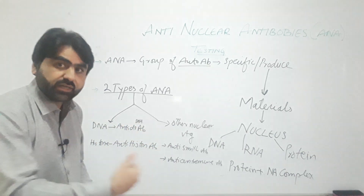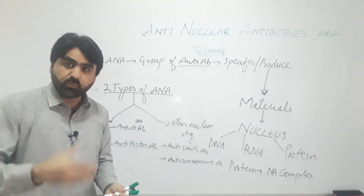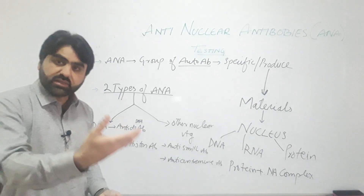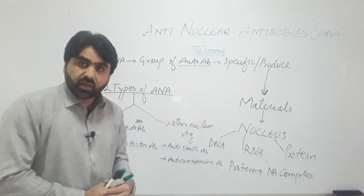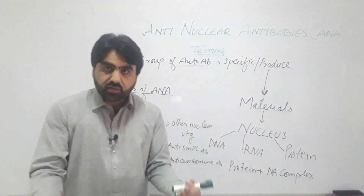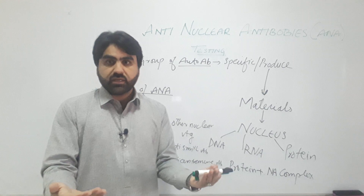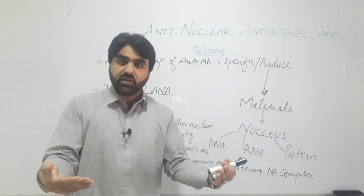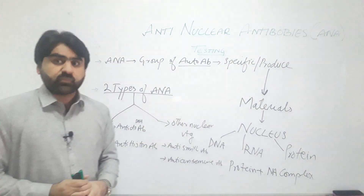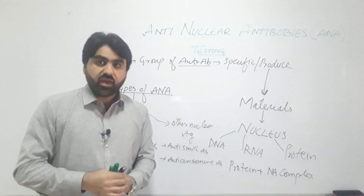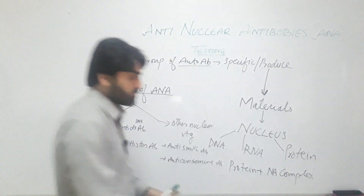The second category includes anti-nuclear antibodies produced against other nuclear antigens, such as anti-Smith antibodies — Smith antigen is a protein antigen present inside the nucleus — or anti-centromere antibodies. There are also other nuclear antigens like Ro antigen, La antigen, SSA antigen, and SSB antigen, making a large list of nuclear antigens against which we can have anti-nuclear antibodies.